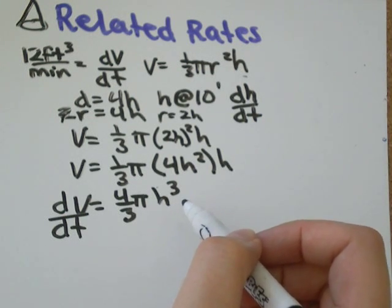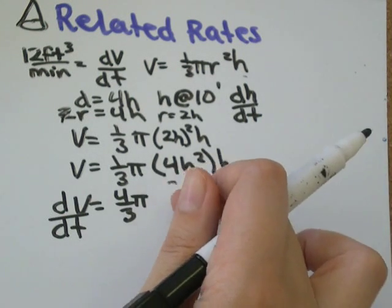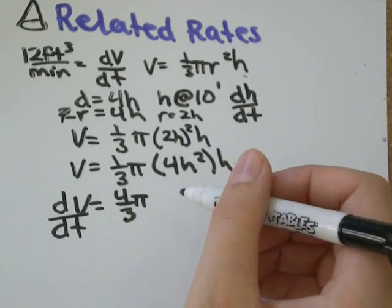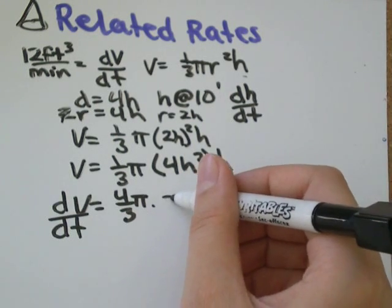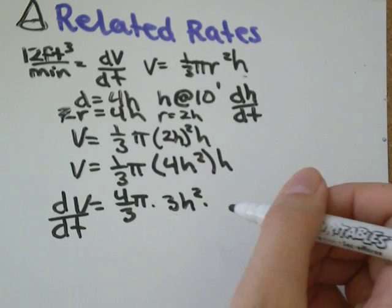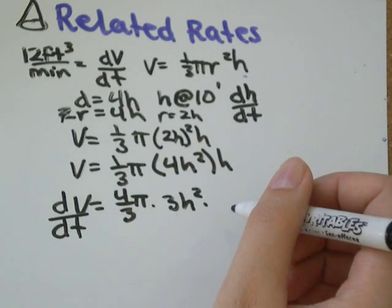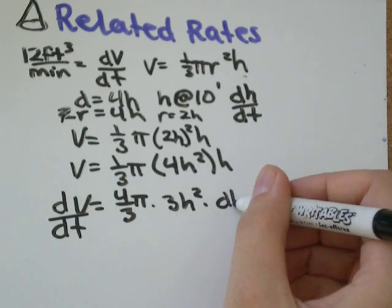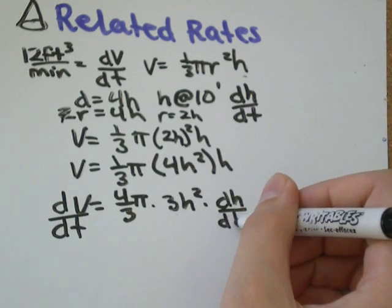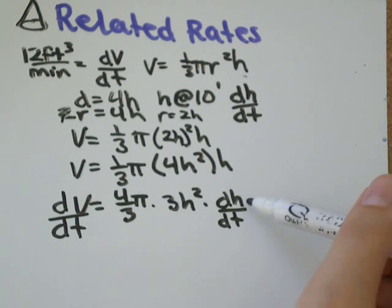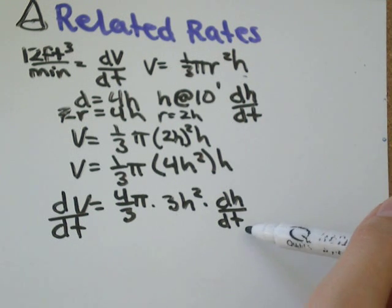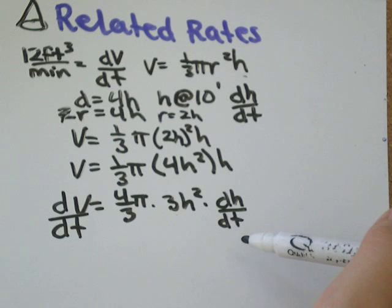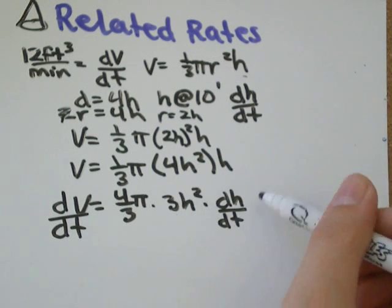If we differentiate h cubed with respect to t, we'll get the derivative of h cubed would be 3h squared times, sort of like h prime. You know, whatever h is, we don't know the derivative or the rate of change. That's what we're trying to find. So the derivative of h with respect to t would be dh dt. And that's good. This is what we're trying to solve for.